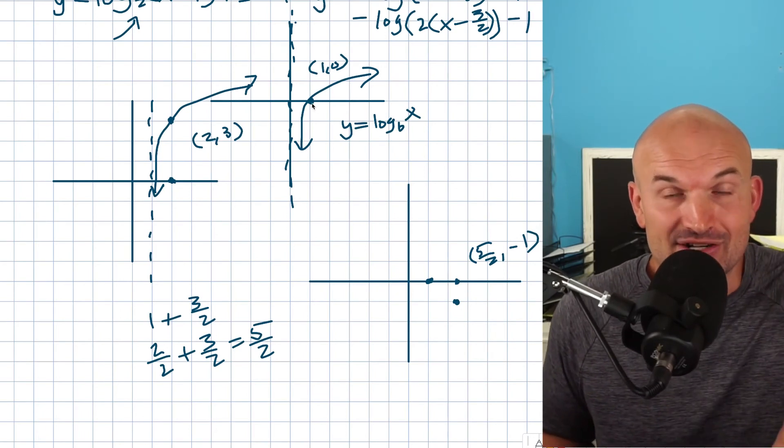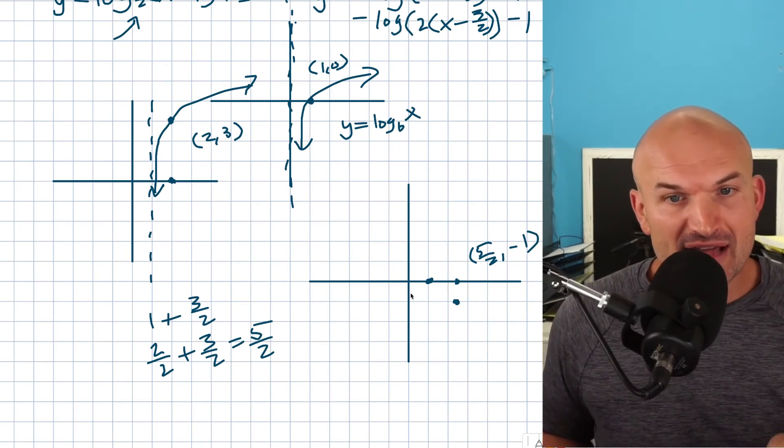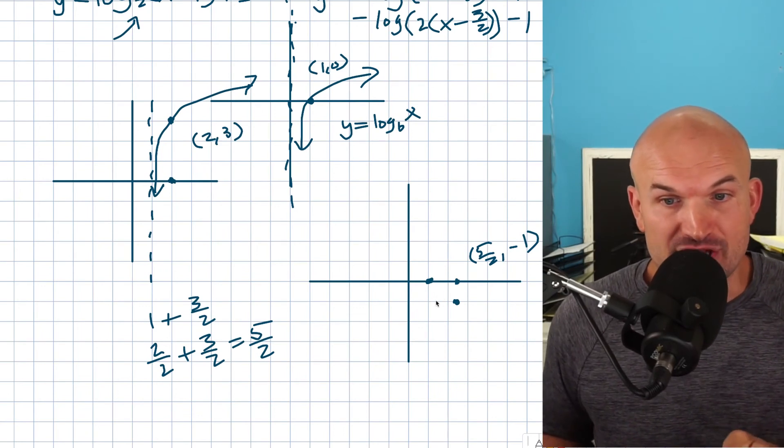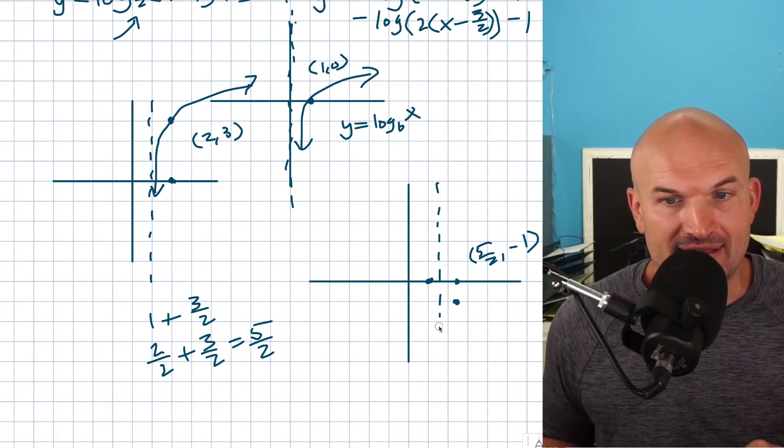That is my original x intercept. This one point that I knew has now been shifted over here. I also have my asymptote. My vertical asymptote got shifted over 1 and a half. So therefore I'm just going to go ahead and graph that there.